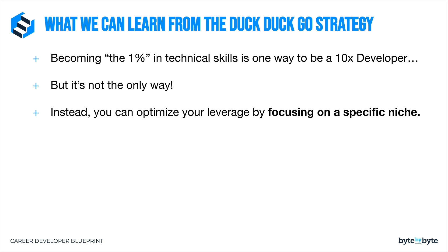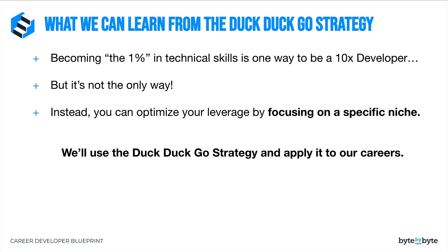Today, Google has a market cap of over a trillion dollars, and yet DuckDuckGo manages to hold its own because they focus so much on privacy. That's one thing that Google just doesn't do and doesn't really care to do. DuckDuckGo has been very successful because they said, we're not going to try and do everything. We're not going to compete directly with Google on all fronts — we're going to compete on this one specific thing. And that's what I'm going to show you how to do in your career: use the DuckDuckGo strategy of niching down and apply it to our own careers.